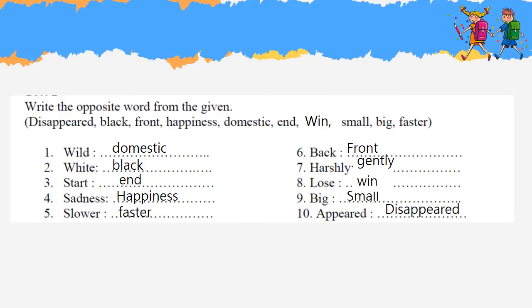Right. The words given are: disappeared, black, front, happiness, domestic, end, win, small, big, faster.